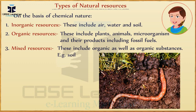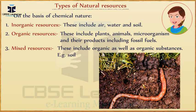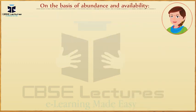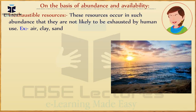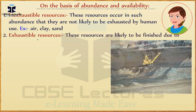Third, mixed resources — these include both organic as well as inorganic substances. Example: soil. On the basis of abundance and availability: First, inexhaustible resources — these resources occur in such abundance that they are not likely to be exhausted by human use. Examples: air, clay, sand.